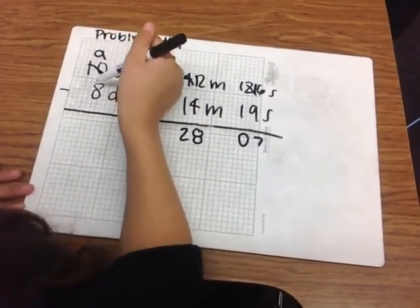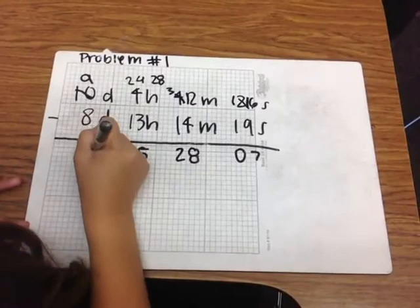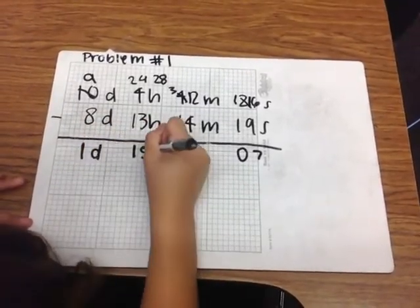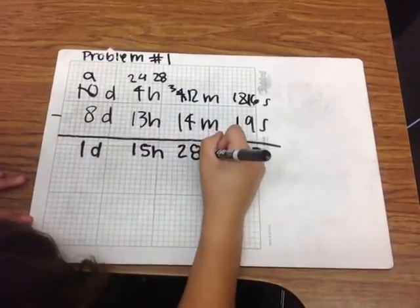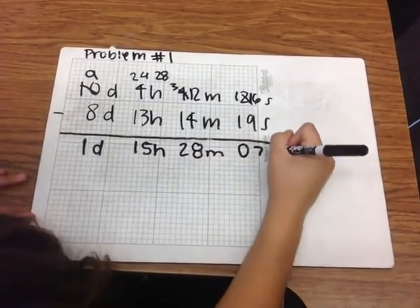Now, 9 minus 8 equals 1 day. So our answer is 1 day, 15 hours, 28 minutes, and 7 seconds.